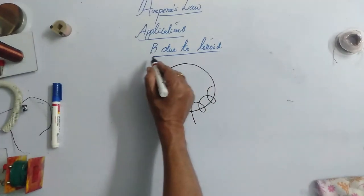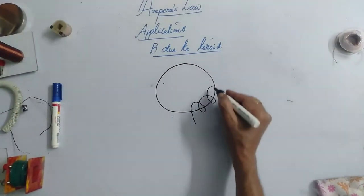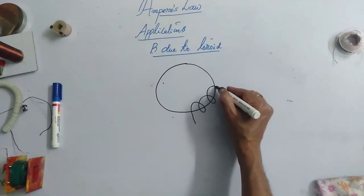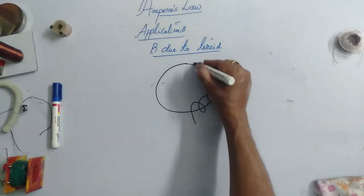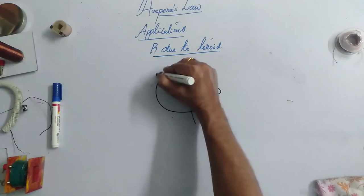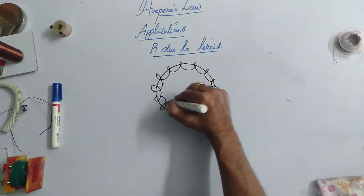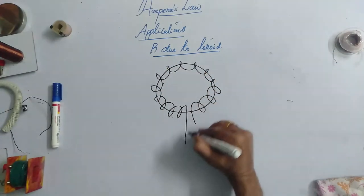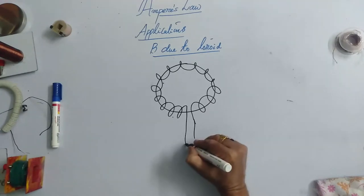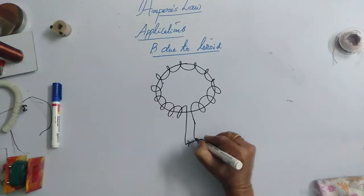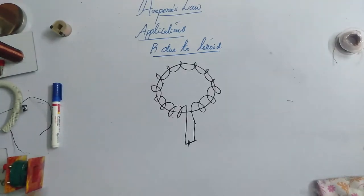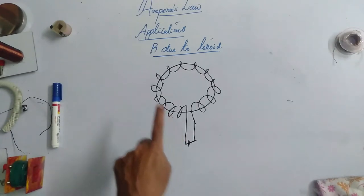Now, we are deriving the magnetic field due to a toroid solenoid. What is actually a toroid? If you take a wire and it is like this,